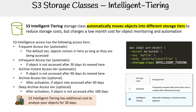S3 Intelligent Tiering has additional costs to analyze your objects for at least 30 days, because if an object hasn't been accessed for 30 days, it would never move into the infrequent access tier. The point is, once it's turned on, there's that additional monitoring cost, plus obviously the cost of those tiers that you would normally have — and you can pretty much map them to what they're supposed to go to.